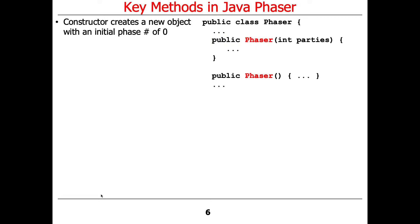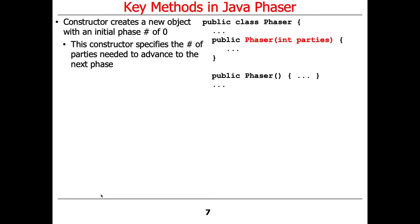The constructor is used to create a new object, which has an initial phase number of zero — it starts at the initial phase, kind of like the initial cycle. The constructor that takes the parties parameter specifies the number of parties that are needed to advance to the next phase. That's a bit like the cyclic barrier — you give a parties parameter, and that many parties have to await or arrive in order to move forward.